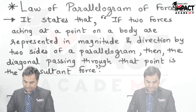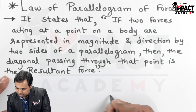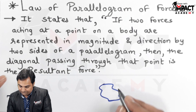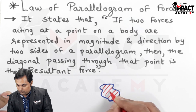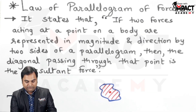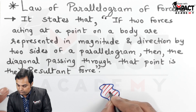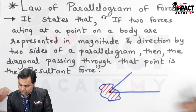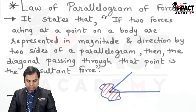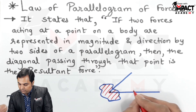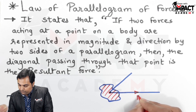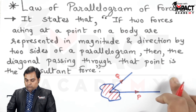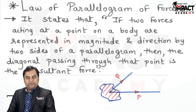I will draw the diagram along with it. If there is an irregular shape — any given body — on this body there is a point, and there are two forces which are represented by the two sides of the parallelogram. These forces should be acting at and away from the point: one is force P, the other is force Q. Now we need to complete this parallelogram.